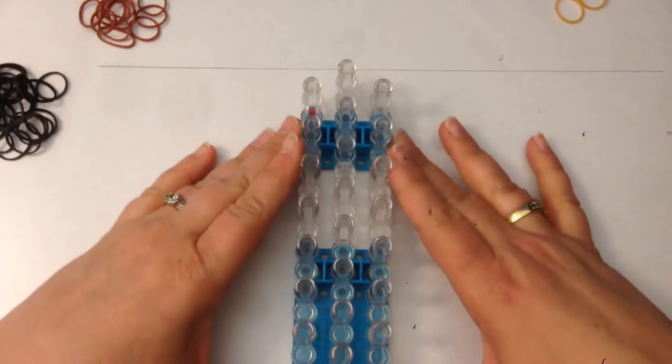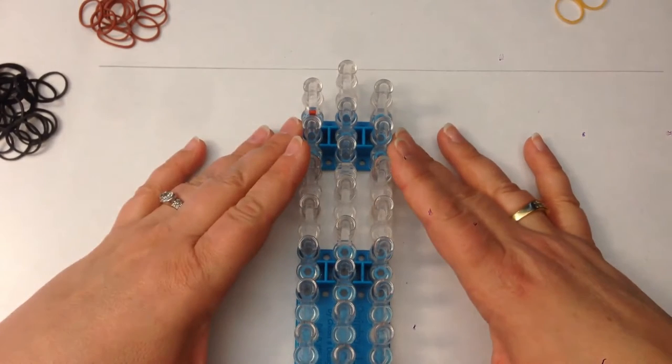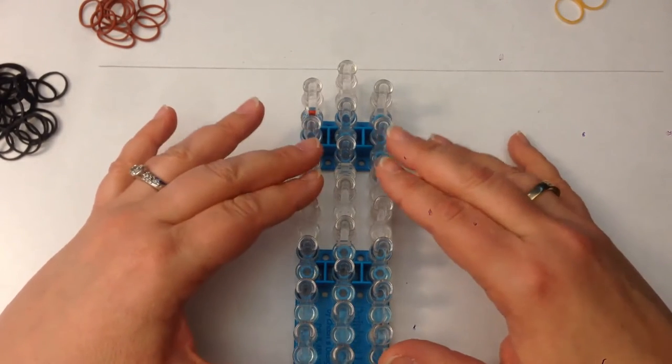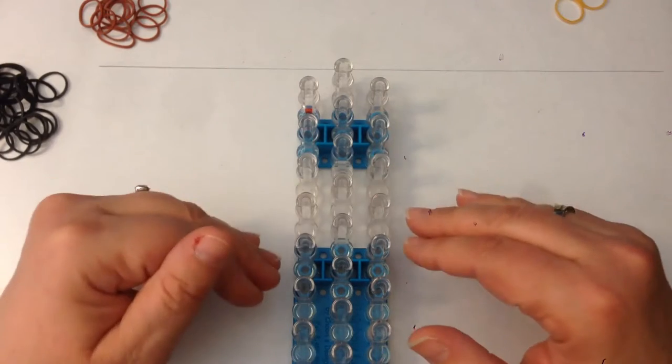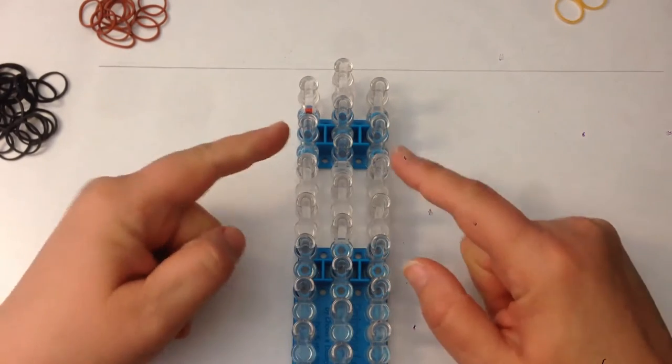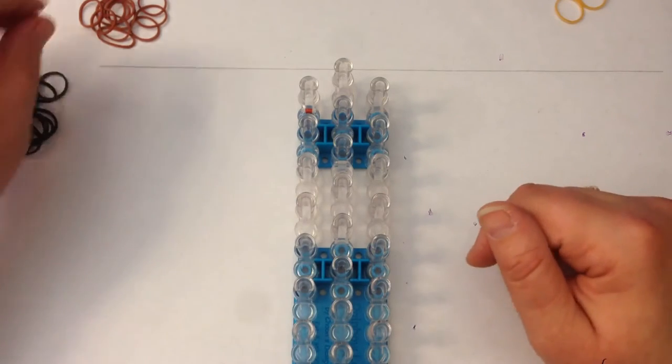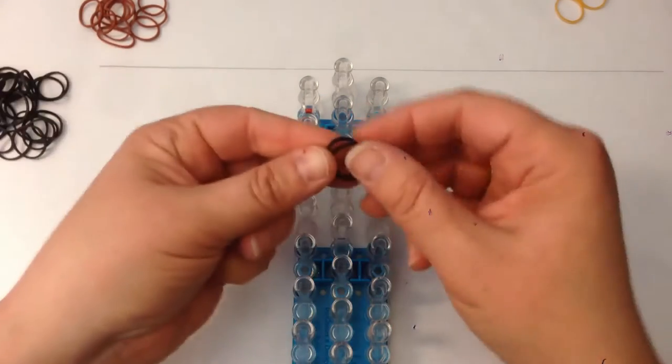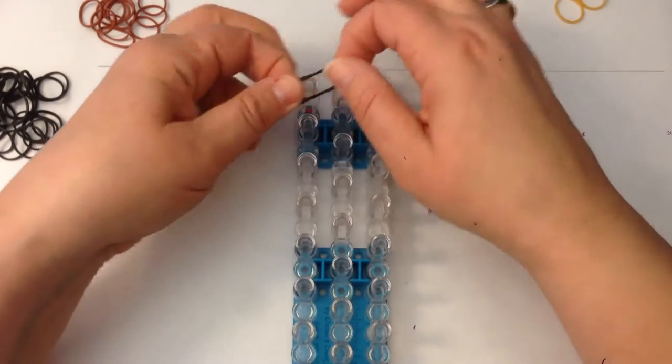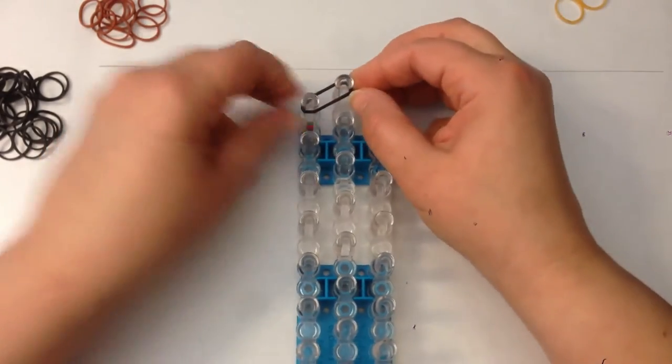We're going to start with a single loom in the offset configuration, which means columns one and three are slightly lower than column two. The arrow is facing towards you or the open part of the peg facing towards you. We're going to be double banding, which means you take two bands and place them across the pegs as if they were one.